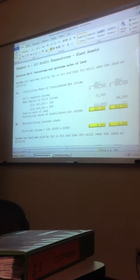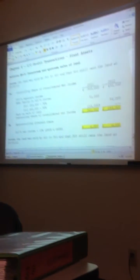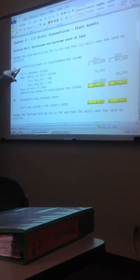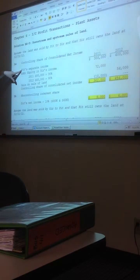In the first one, the parent sells to the subsidiary and the subsidiary still has it. So we need control and share of consolidated income, so we're going to start with parent's separate income for the two years.